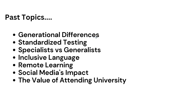One of the readings said that the differences between generations are significant and have a major impact on society. The other reading said no — that generational differences are not important and don't affect society very much. Test takers had to pick a side. That's pretty challenging, right?